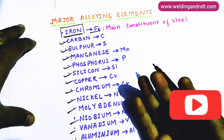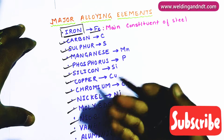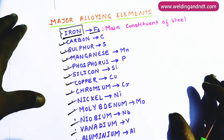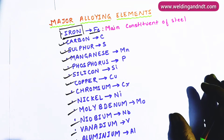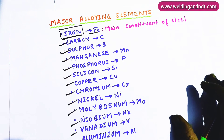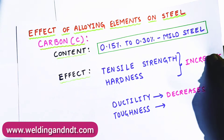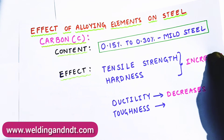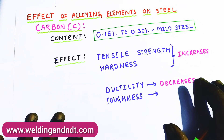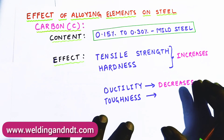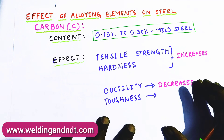These are the elements which can be added in steel to improve the properties of steel. I will now discuss each element one by one. This is very important for a welding engineer or for a mechanical engineer as well.